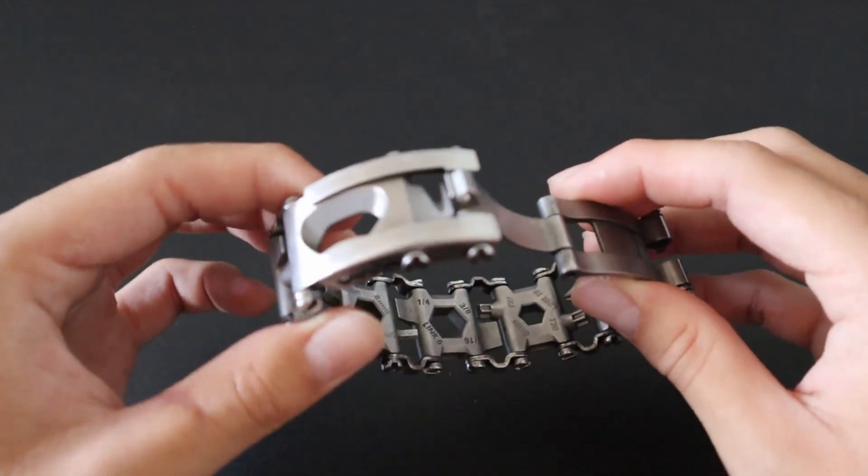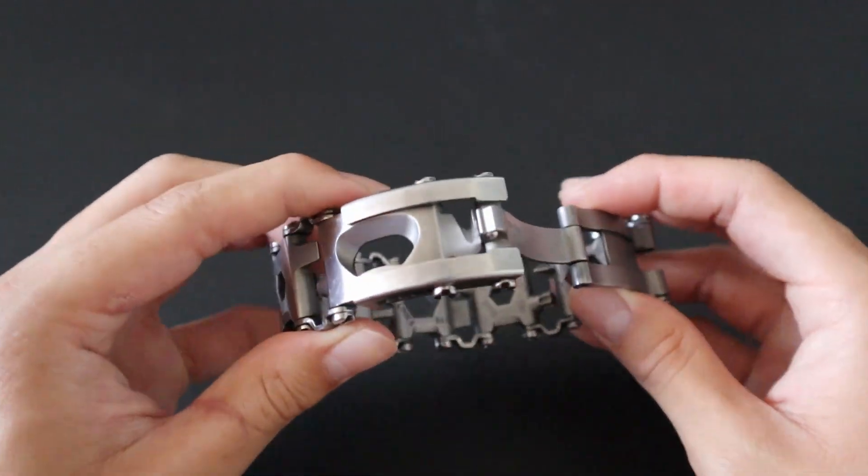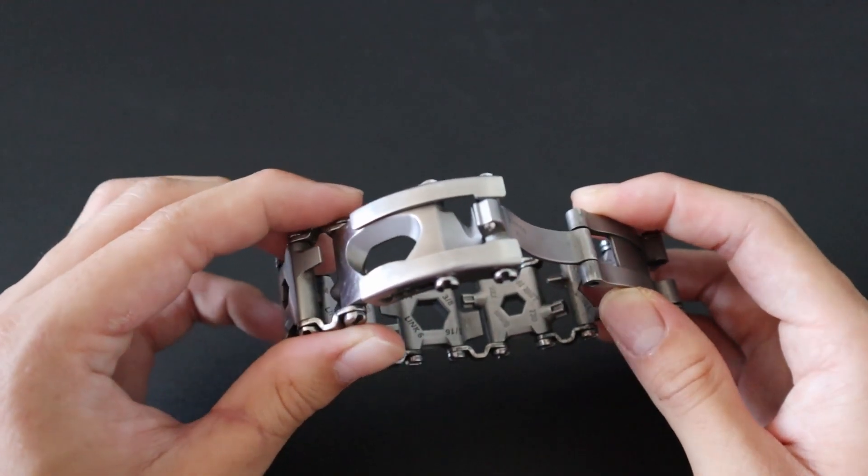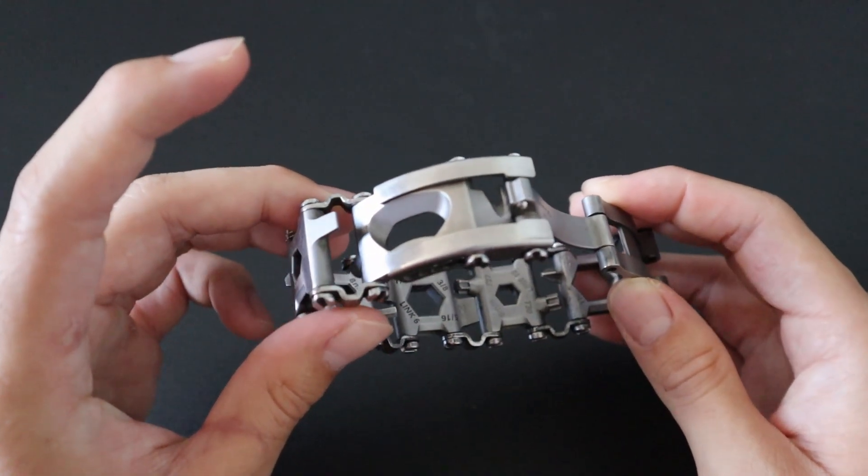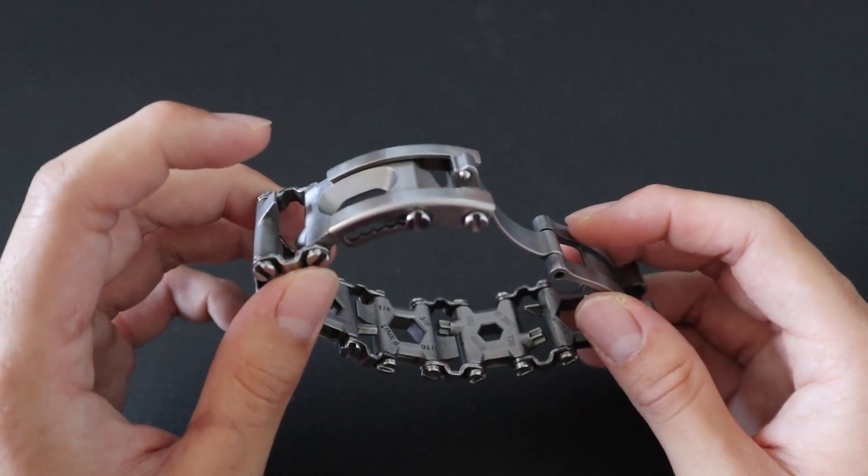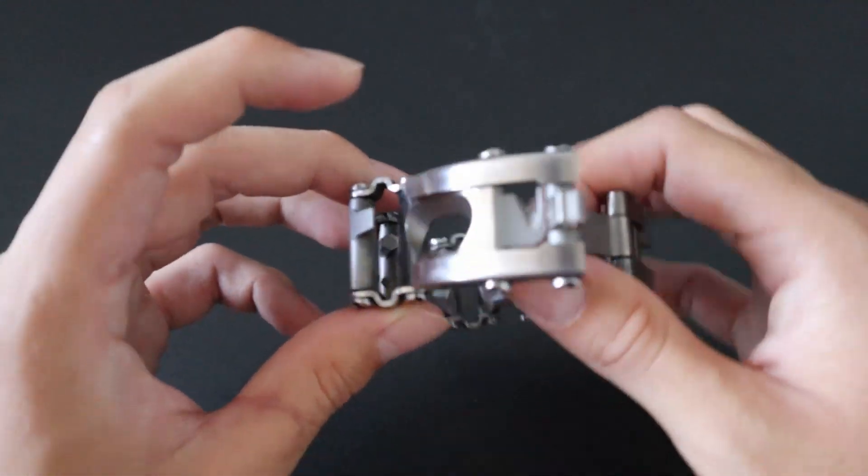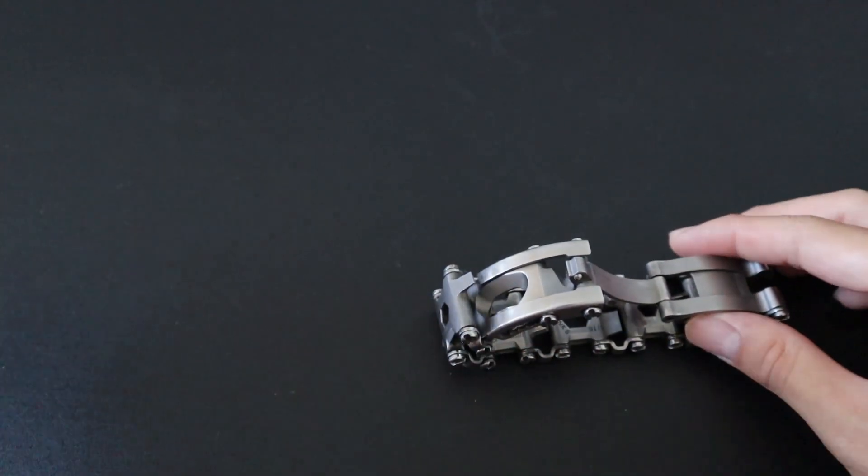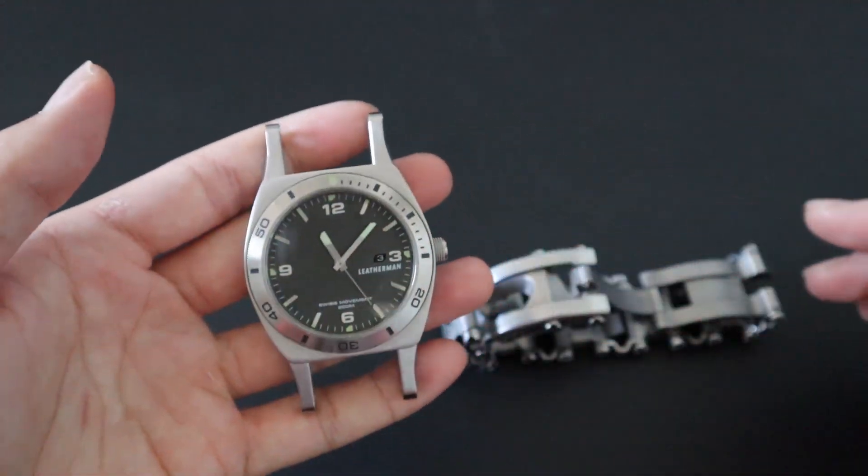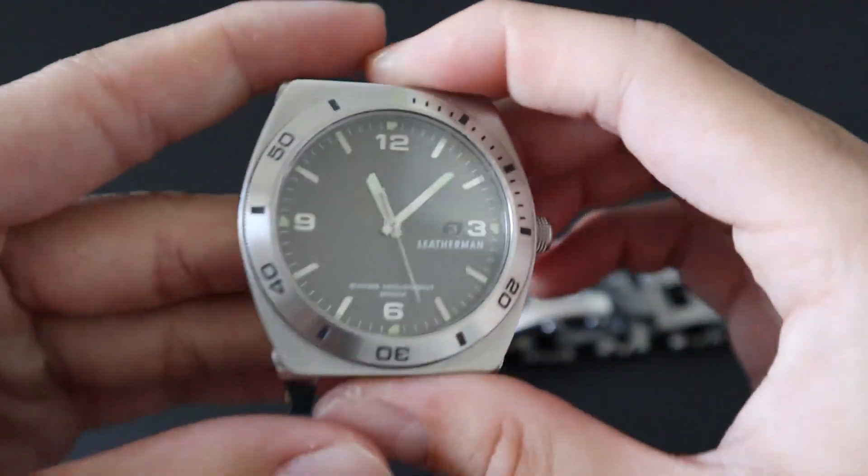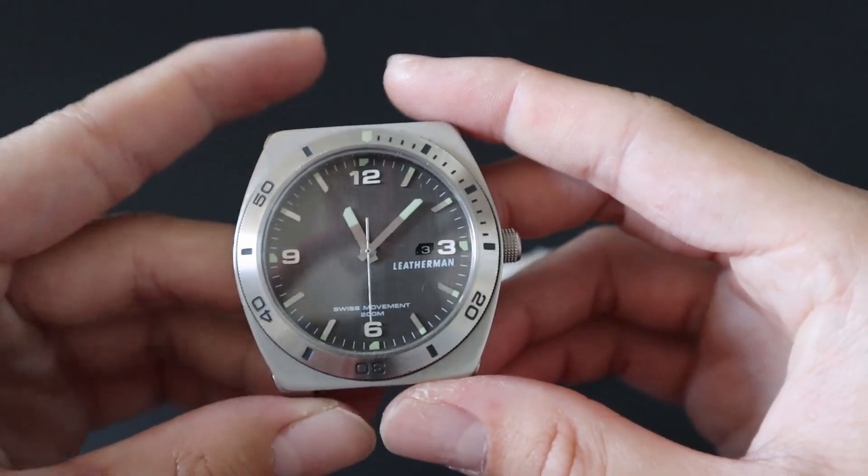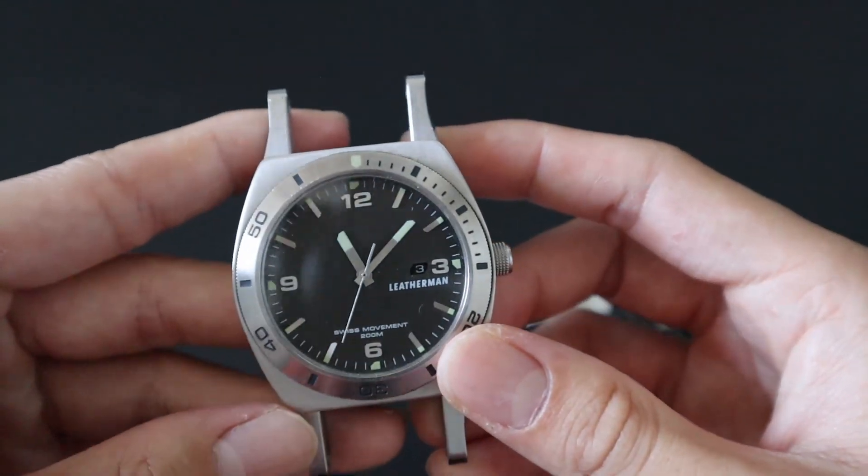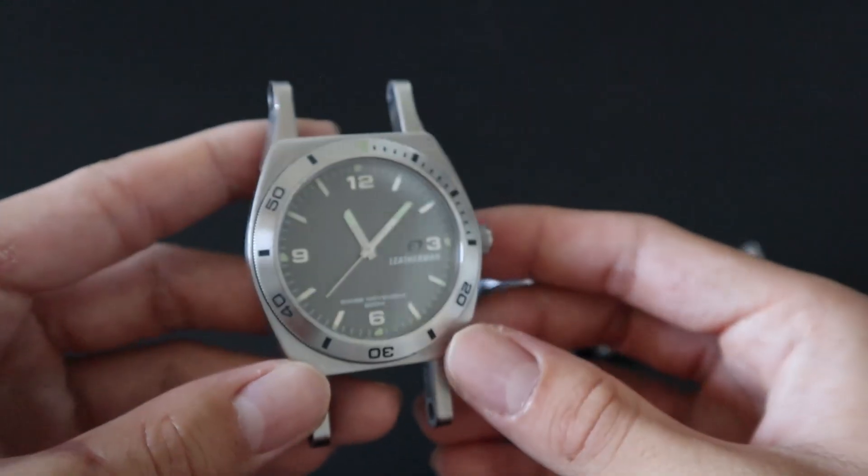So first, this actually isn't a regular Leatherman tread. There are various Leatherman tread models. There's the regular tread, the LT model which is basically a thinner, more lightweight version of the tread, and then there is the tread tempo variant. This actually is the tread tempo. It did, in fact, come with that Swiss made timepiece. I'm not a big watch guy or anything, but it is Swiss made. It does have a sapphire crystal. It's quartz movement, not automatic, but it's pretty solid for what it is.